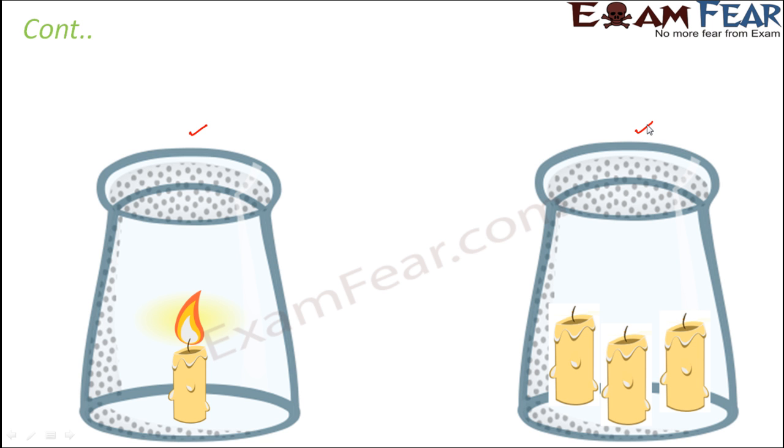Now what do you observe? In the first case, the candle glows for some time and then goes off. In the second case also, all the three candles glow for some time and then go off. Let's suppose in this case the time for which they remain lighted after the glass is being put is t2, and in this case let's say it is t1.